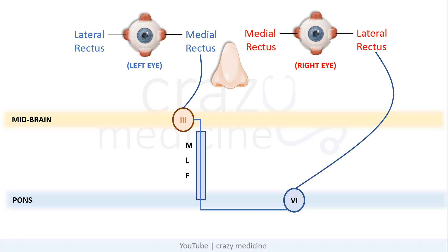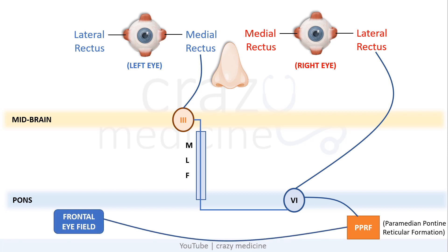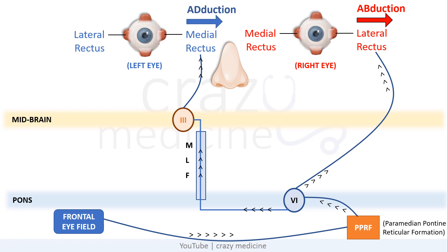Now you may think: from where does the signal come? The 6th nerve gets signals from the PPRF, i.e. paramedian pontine reticular formation, which receives signals from the contralateral frontal eye field. If a signal comes for looking right, the left frontal eye field sends the signal to the right PPRF, which sends a signal to the right 6th nerve nucleus, and the 6th nerve stimulates the lateral rectus of the right side to abduct. At the same time, the signal reaches the left 3rd nerve nucleus through the MLF, which stimulates the left medial rectus to adduct. The right-sided 6th nerve is connected to the left-sided 3rd nerve via the left MLF, as you can see in the figure.